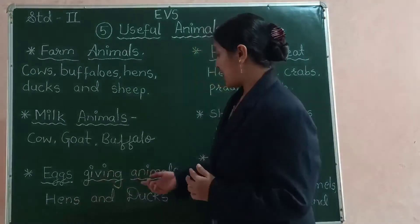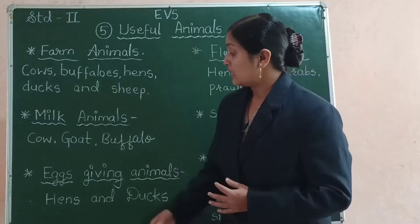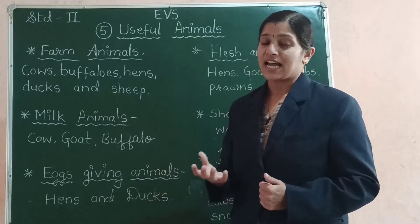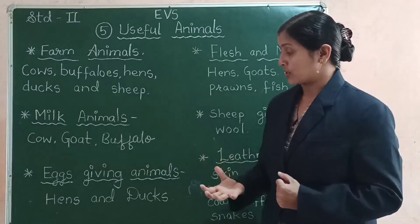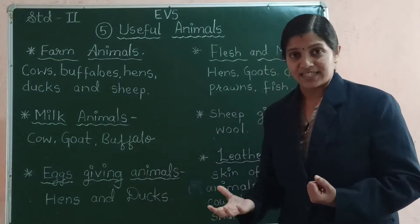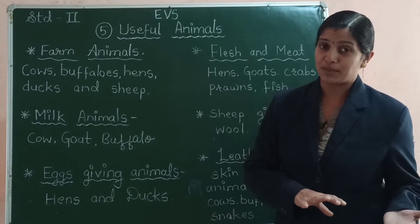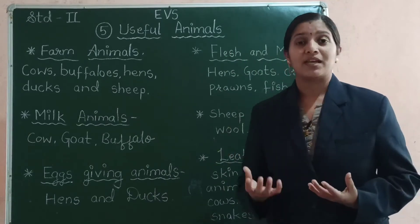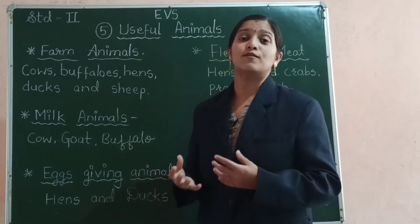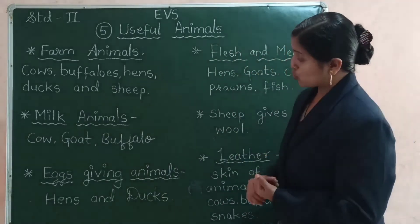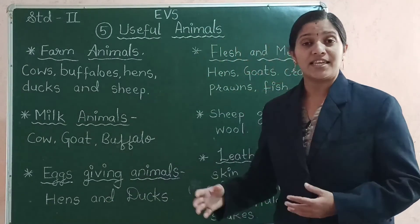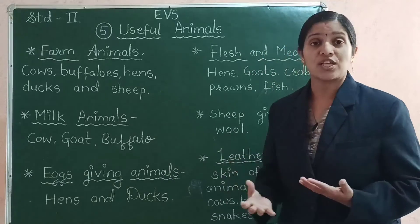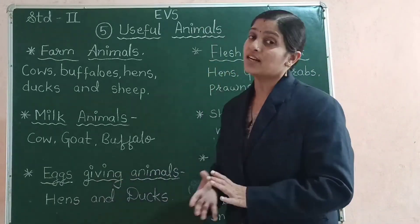The next category is egg-giving animals. Animals like hens and ducks give us eggs, and eggs are also a food product. Some people like to eat eggs, but not all — some people are vegetarian and prefer food obtained from plants. A few people like to eat non-vegetarian food, which is food obtained from animals. Hens and ducks give us eggs, and various dishes are prepared from the eggs obtained from hens and ducks.